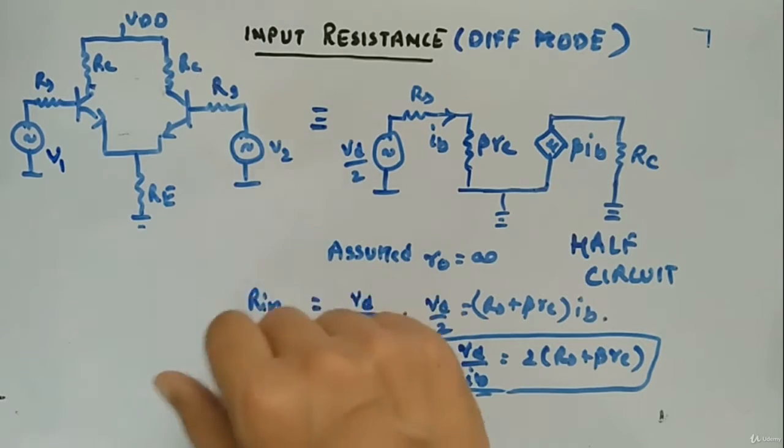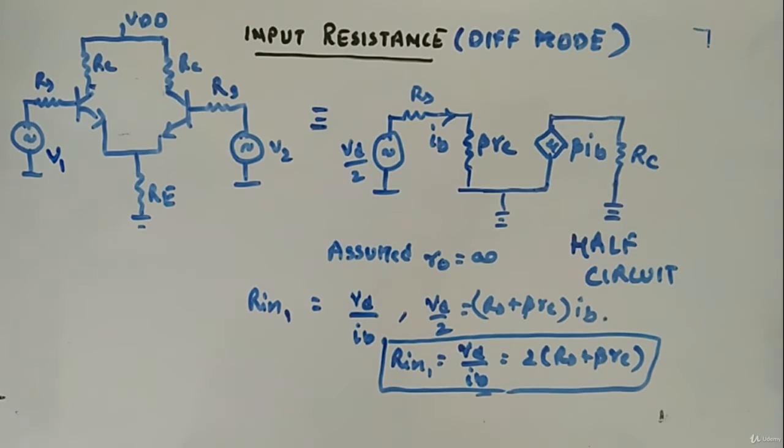Rin1, because only one source you are applying, another is off. So corresponding to here you will see Vd by 2. So apply KVL, so Vd by 2 is equal to Rs plus beta Re Ib.